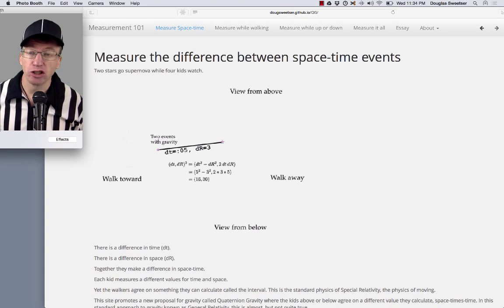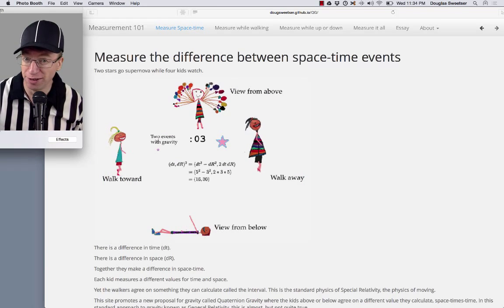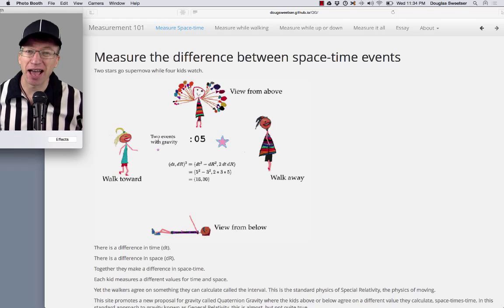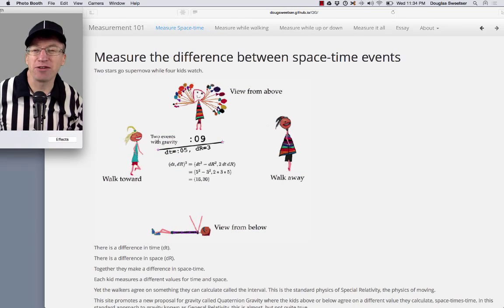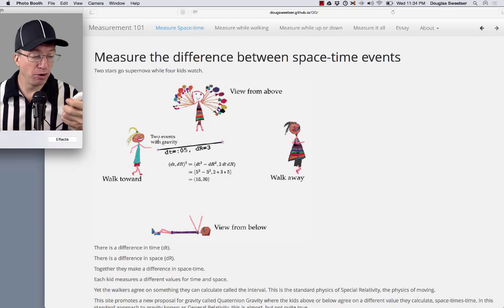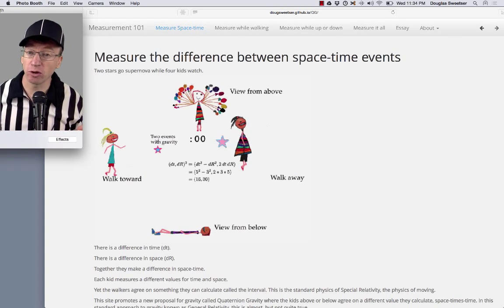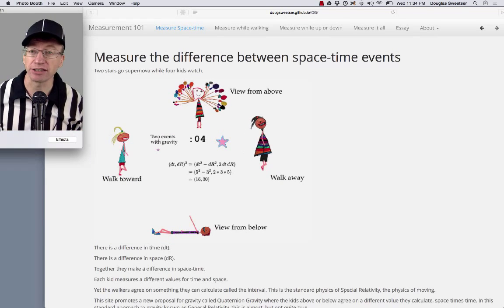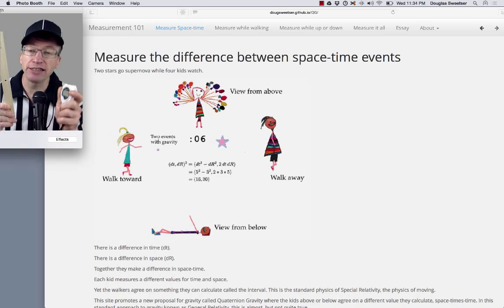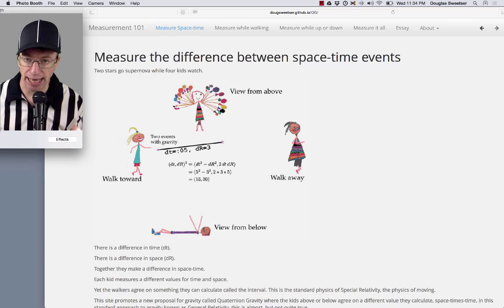On this page, two stars go supernova. There goes one, followed by another. And we can measure that time if we've got ourselves a nice handy stopwatch. And since the stars are in different locations, we can also measure the distance between the two events. So together, these two types of measurements make up a difference in space-time.